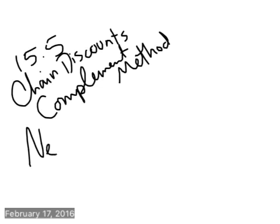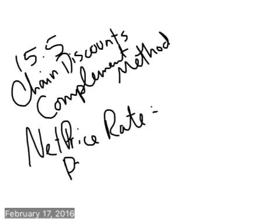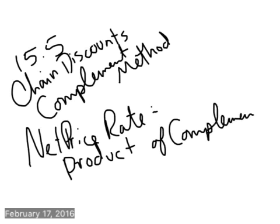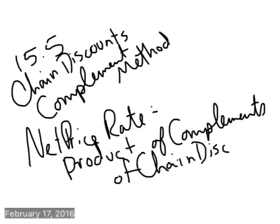So the first formula that we're going to have to figure out is the net price rate. And the net price rate is the product, and product meaning multiply, of the complements of the chain discount rates. Okay, that's the first thing that we have to do.